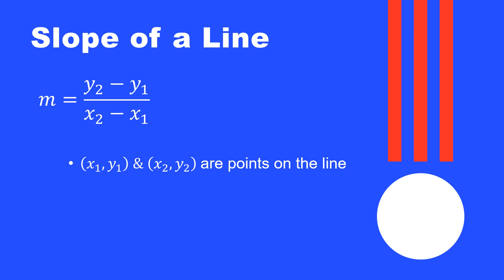People are generally pretty good with slope. One thing I want to warn you about: whenever you are asked to find the slope, or if you need to find the equation of the line and first find the slope, always label your points X1, Y1, X2, Y2. Each point's X and Y coordinates should have the same subscript. Make sure you don't label your points like X1, Y2, or X2, Y1 — the subscripts should match within the points.